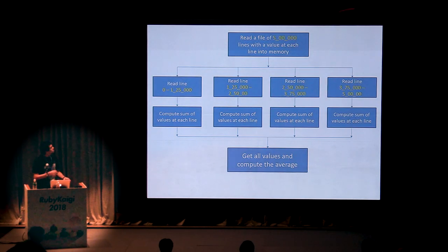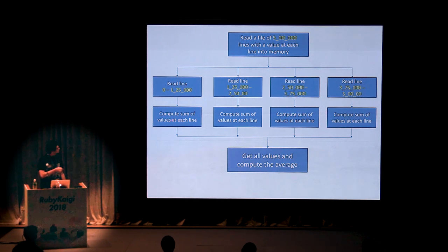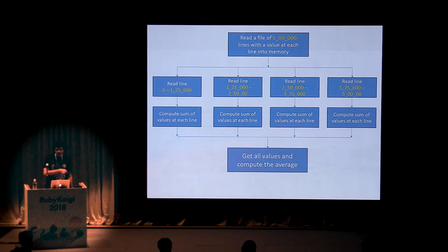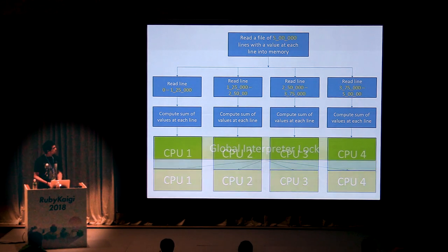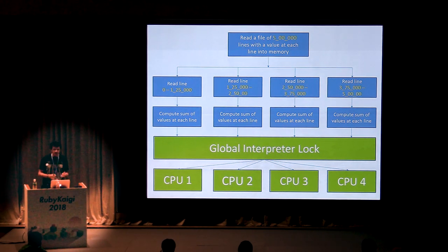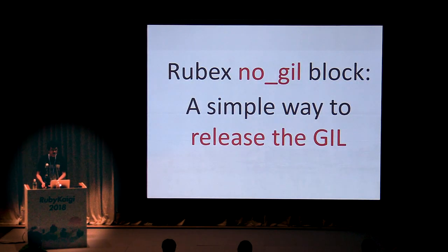Say you have a file with 500,000 lines with a value at each line, and you want to read this into memory and compute the average of these values. You want to distribute this among four threads, compute the sum at each thread, and then get the average of all values. The ideal scenario would be to distribute this among four CPUs, which happens with JRuby or Rubinius. But with the GIL, it inhibits multi-threading and only lets you access the CPU one thread at a time. To solve this, Rubex provides a no_gil block, which is a simple way to release the GIL without really breaking your head over it.